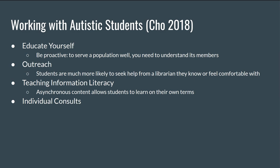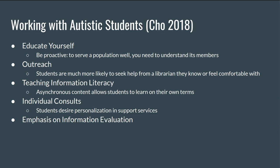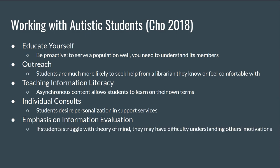Individual consults: no student likes being treated like just another cog in the machine, and neurodivergent students are no different. Students desire personalization and support services, and individual consultations allow that level of personalization. Emphasis on information evaluation: some autistic folks have difficulty with theory of mind — the ability to understand others' intentions and beliefs. Discussing how to evaluate authority in authorship or how authors appeal to different audiences may be especially helpful. Citations: central coherence — the ability to pull information from many different sources in service of a more abstract meaning — may be more difficult for autistic students, who may need help understanding when a citation is needed or how to paraphrase efficiently.